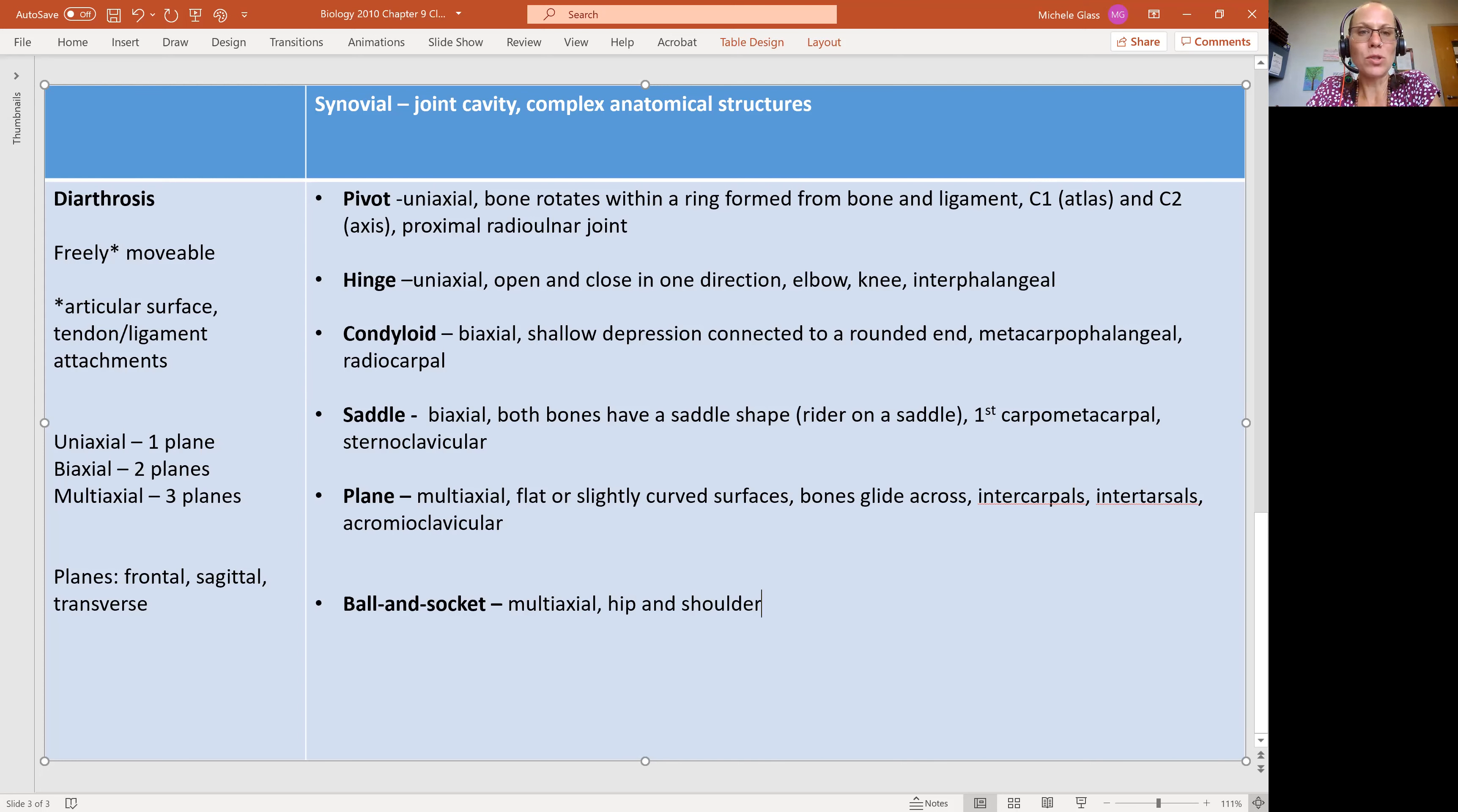So while we get the most movement at the shoulder and the hip, we then have the weakest connection. And so what we see is the job of all the synovial structures is to add some strength and stability back to this joint while still allowing for movement.